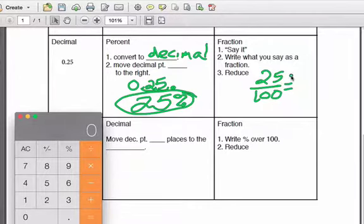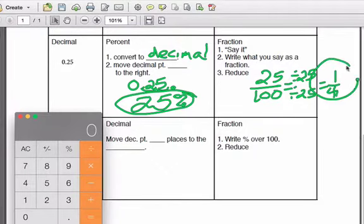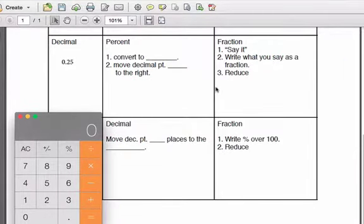Now I reduce it. I do reducing by simplifying into an equivalent fraction by dividing the top and bottom by the same factor. I can see this as dividing both by 25, and I get one-fourth. That would be my fraction, one-fourth. That is converting decimals to fractions. Let's take a look at one more.